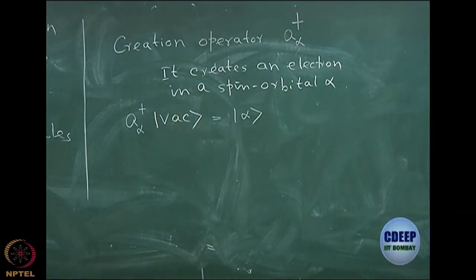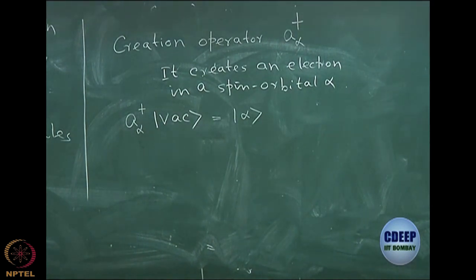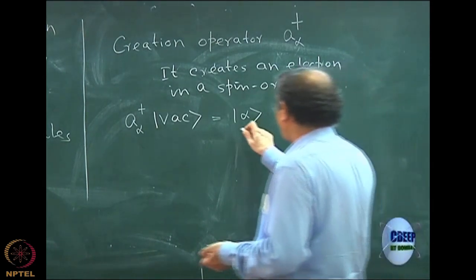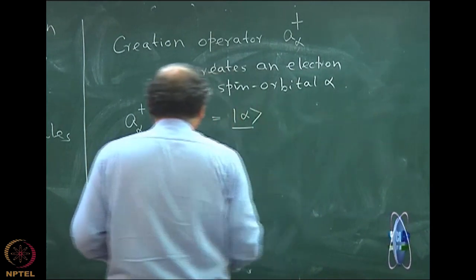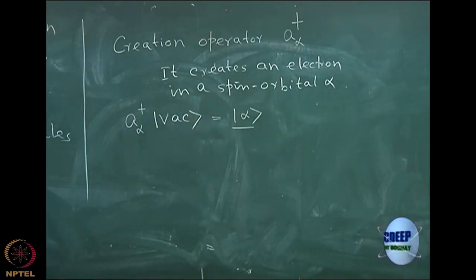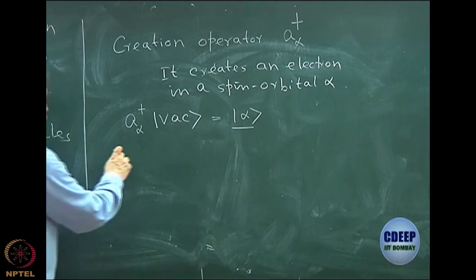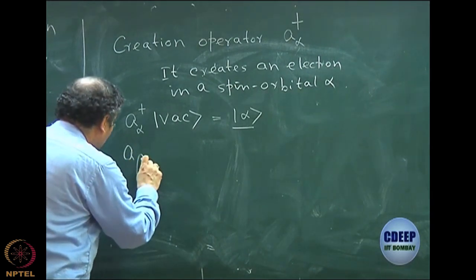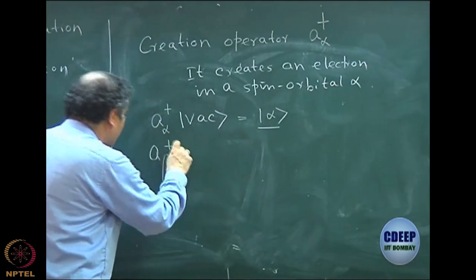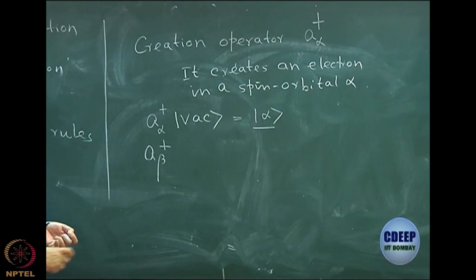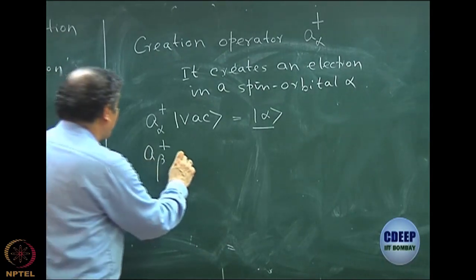Vacuum is an abstract concept — it is a ket vector where nothing is there, a null state. If I allow a†_α to act on it, I will create a state alpha. I can also have multiple creations: another operator a†_β which acts on a†_α |vacuum〉.